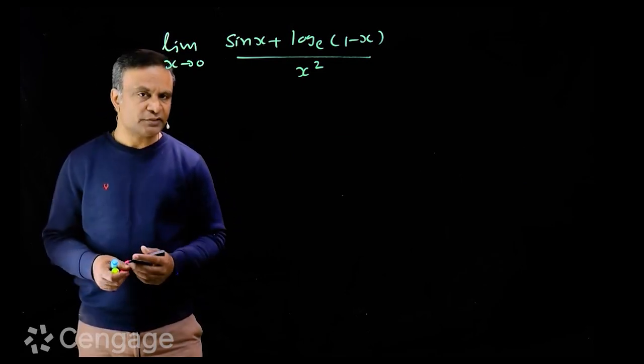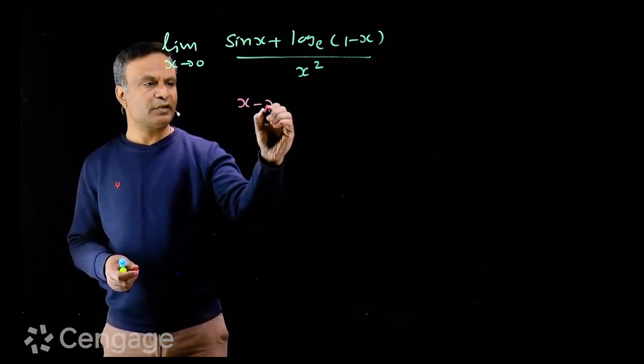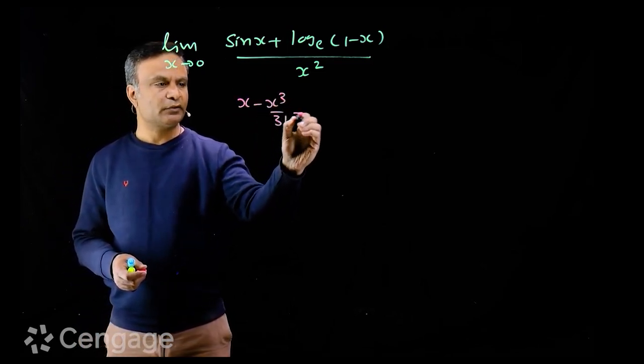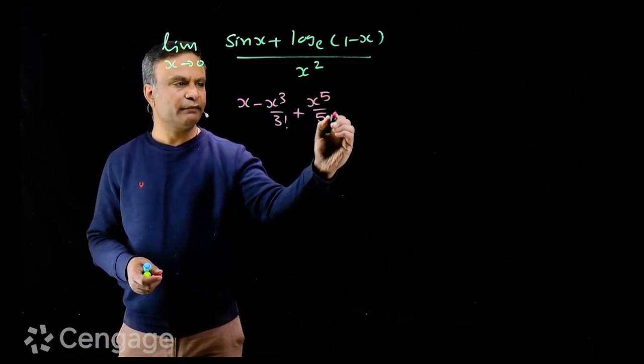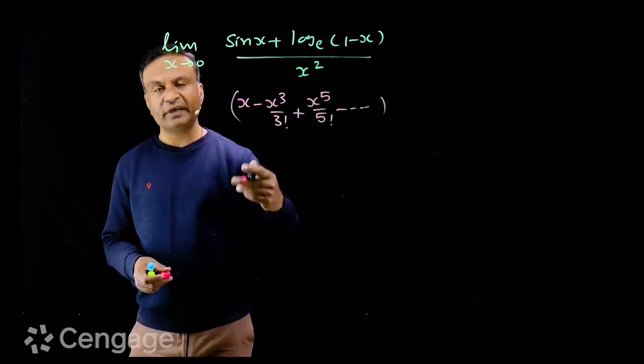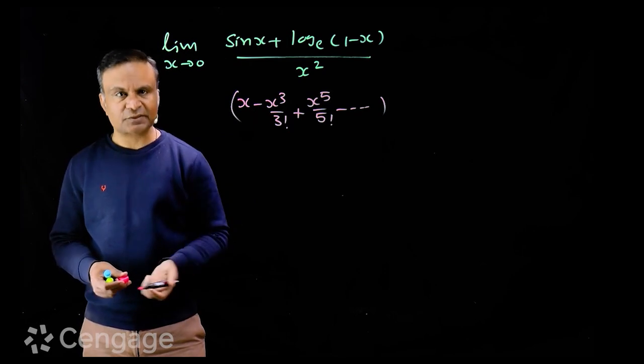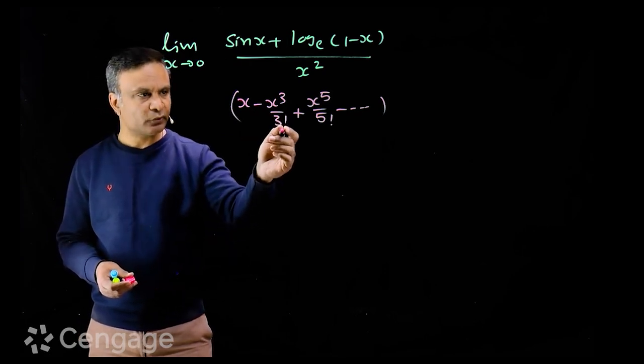We use the expansions of sine x and log 1 minus x. So we have here x minus x cube by 3 factorial plus x power 5 by 5 factorial. We need not to write so many terms because in denominator we have x square. So in fact we should consider only x term x cube upon 3 factorial when divided by x square which tends to 0 when x tends to 0.